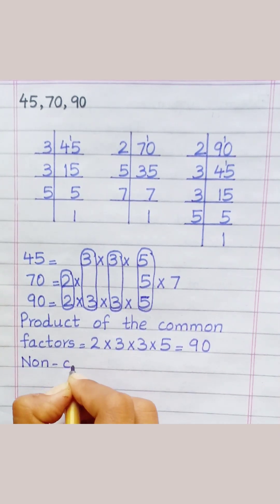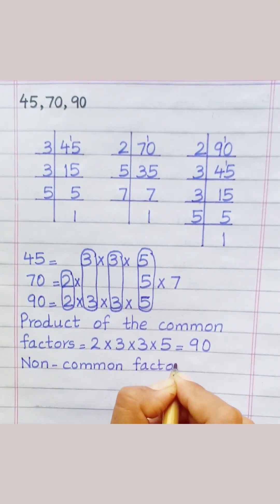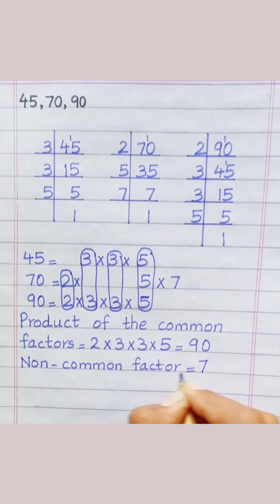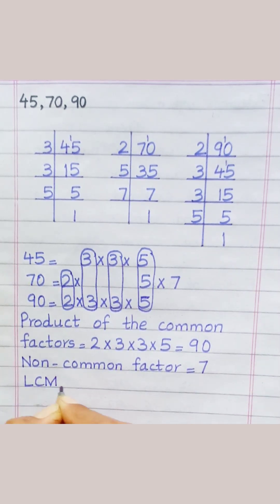Non-common factor equals seven. LCM equals ninety multiply seven, equals six hundred thirty.